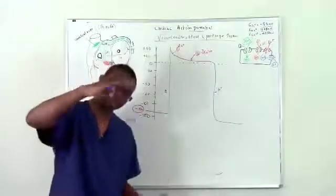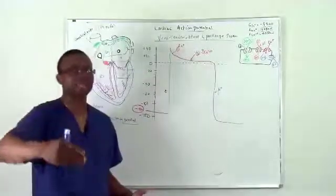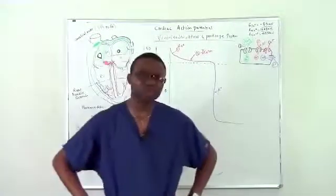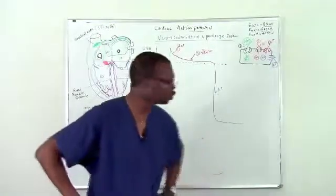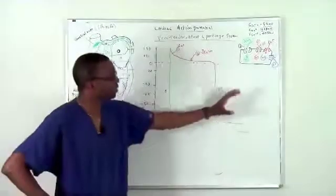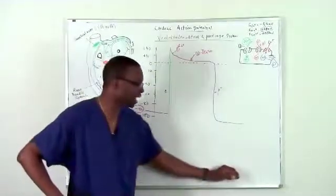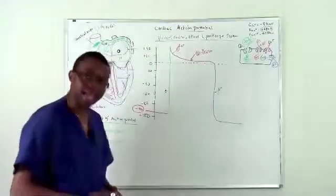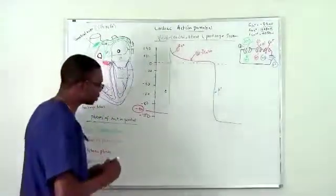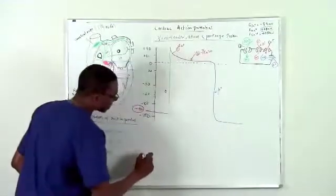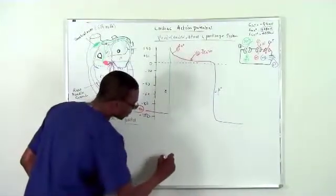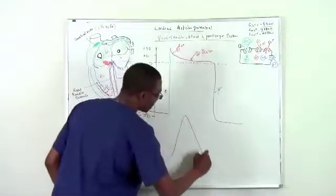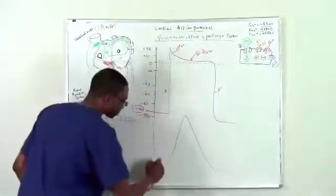Now you probably wonder why we have to go through all this trouble just to talk about the action potential inside the ventricular system. Well, remember, let's take a look at that picture I drew initially of the SA node depolarization. What does the SA node do? It uses sodium, then uses calcium, and then uses potassium.